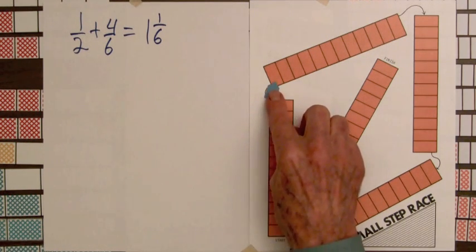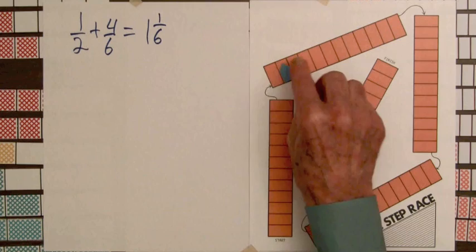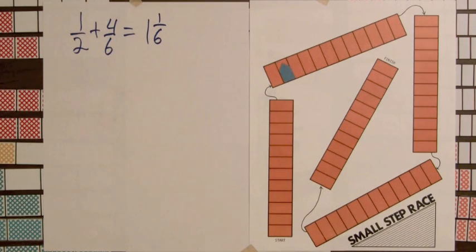So that player would be able to move one whole bar, move them up here, and then one-sixth. That's two more parts, two parts out of twelve. So that would be where the player is at the end of the first turn, if they had selected the one-half bar and the four-sixths bar.